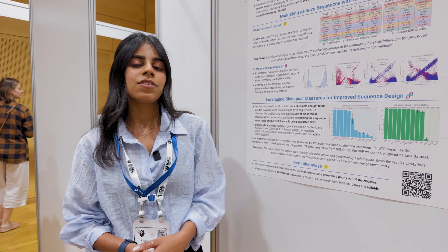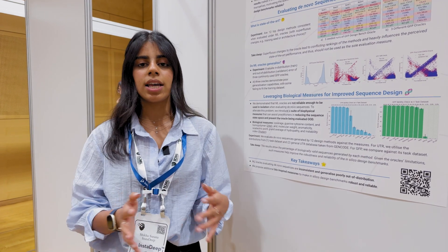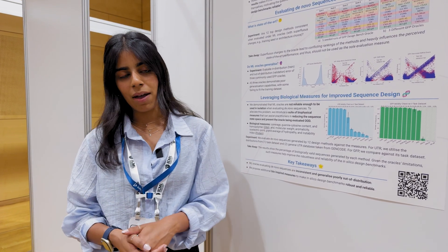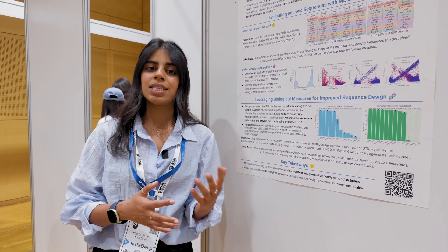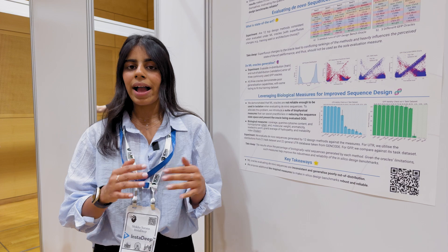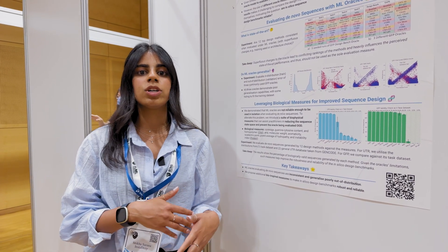With these different design methods, they use different Oracle models to evaluate their sequences. We're taking a look at whether making some superfluous changes to these Oracle models changes the ranking of the different design methods. What we see is that when you change, for example, the seed of the Oracle or the architecture of the Oracle, the ranking of the different design methods changes as well — so there's no consensus on which is the best method or which is the worst method.